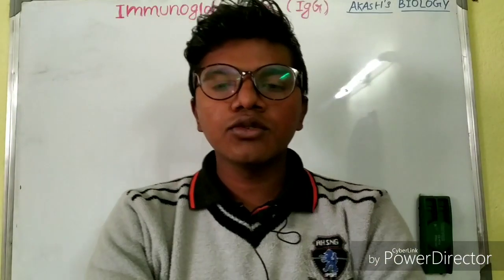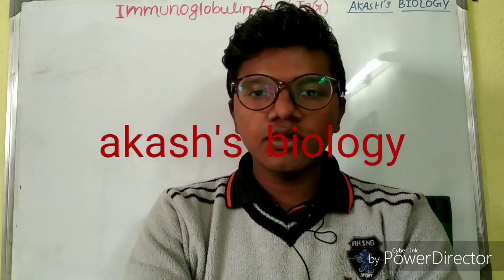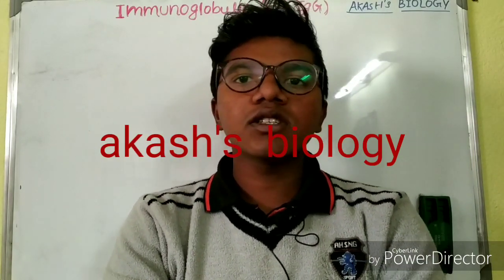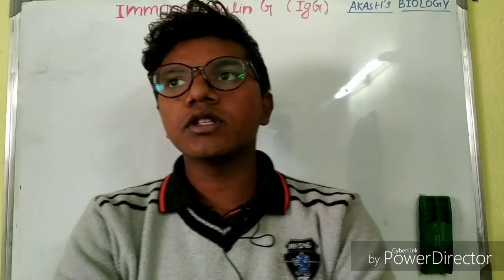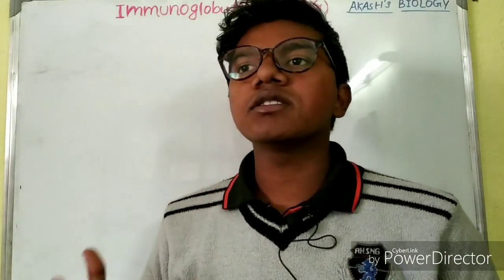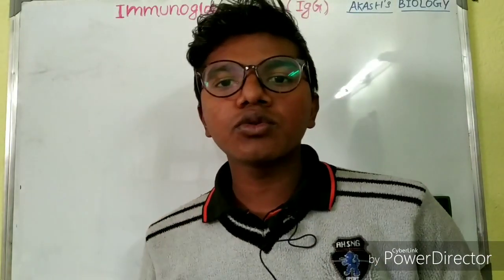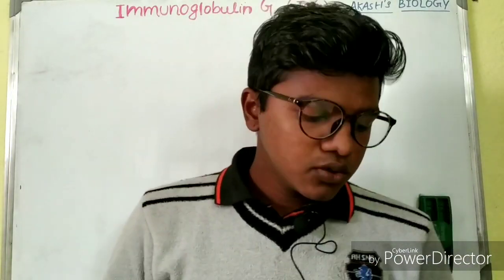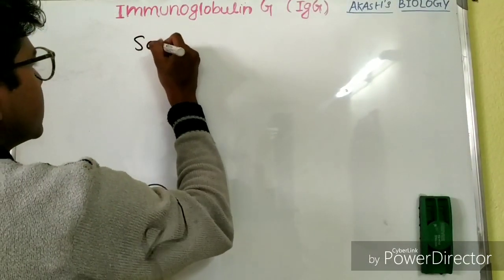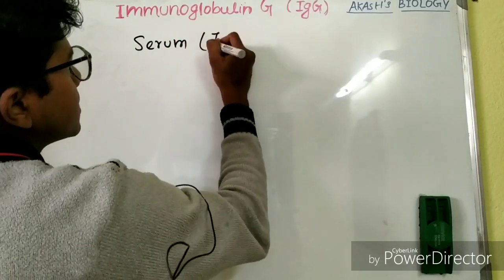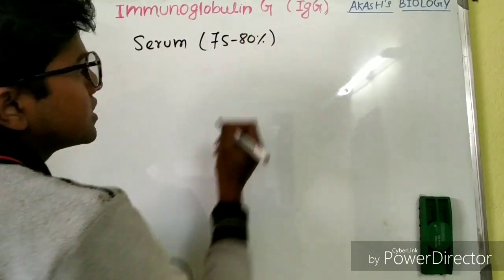Hello friends, welcome to another video tutorial from Akash Biology. Today we will continue our previous lecture on the structure of immunoglobulins. We will deal with immunoglobulin G, which is the major immunoglobulin present in the human body or human serum. The principal site of action of IgG is the human serum, and it constitutes 75 to 80 percent of the total immunoglobulin present in the human body. It is often known as serum immunoglobulin.